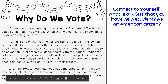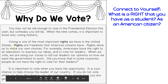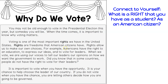Boys and girls, let's make a text-to-self connection. Pause here to think about what is a right that you have as a student and as an American citizen. As a student, it is your right to have an equal and fair education to allow yourself to learn and grow academically. You also have the right to social-emotional support so that you can grow socially and emotionally, and the right to share your thoughts and participate in class discussions. As an American citizen, the text describes that we have the right to an education, to express our ideas, and to vote for our leaders.